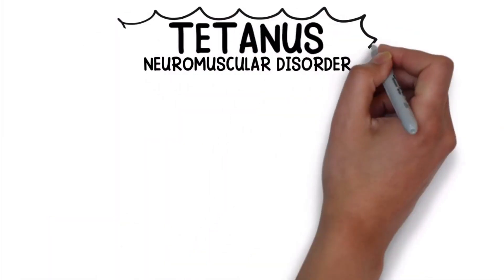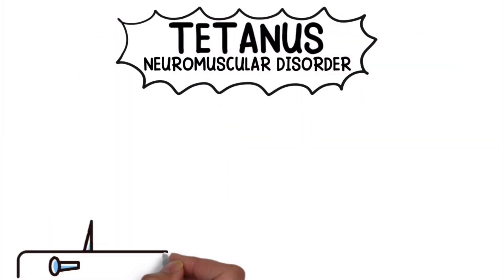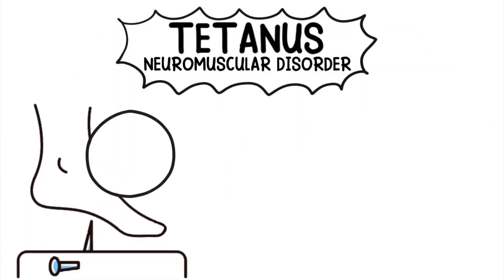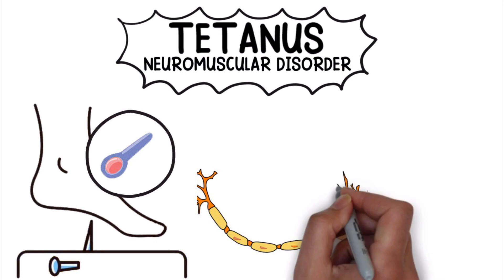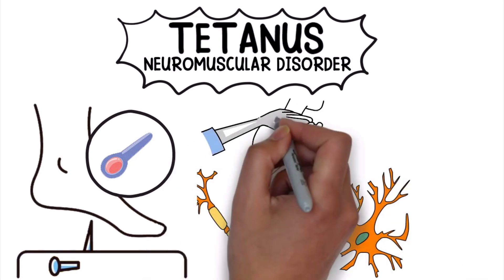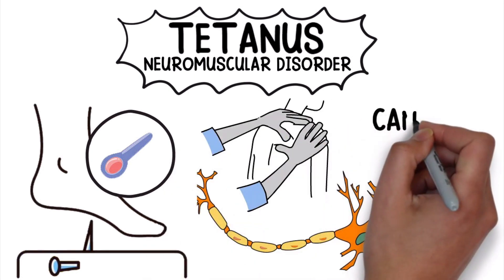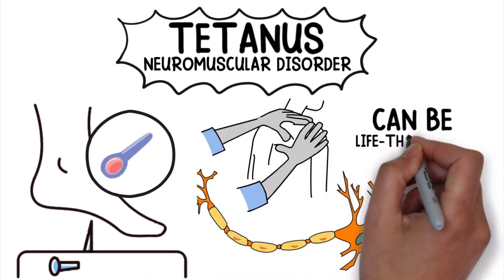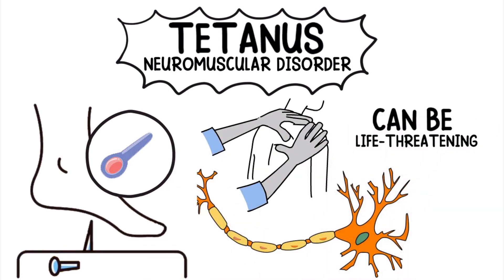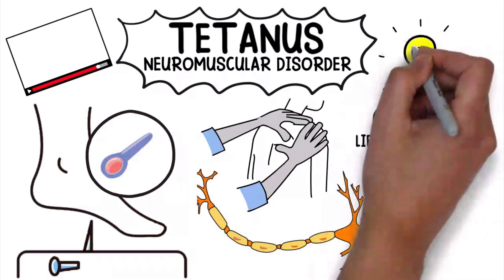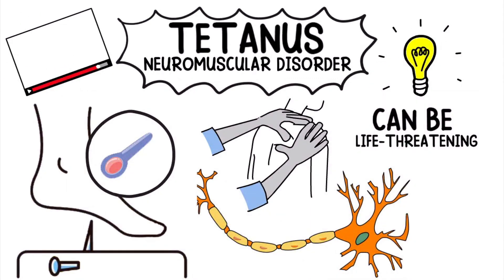Tetanus is a neuromuscular disorder that stems from a bacterial infection that affects the nerves, causes muscle spasms, and can be life-threatening. We created this video to cover the medical definition and provide you with a quick overview of this topic. So if you're ready, let's get into it.